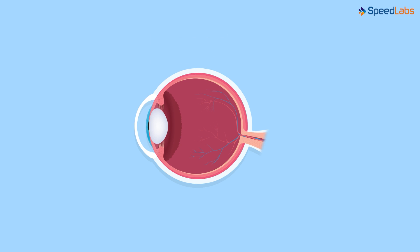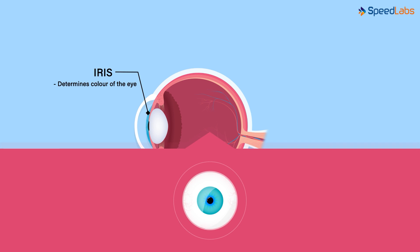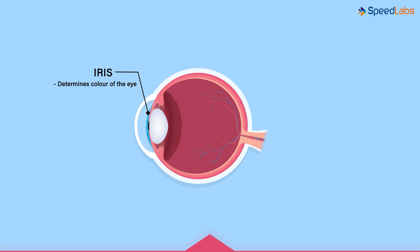Behind the cornea, there is a dark muscular structure called the iris. Iris determines the colour of the eye. For instance, when we say that a person has blue eyes, it means that the colour of the iris of that person's eye is blue. There is a small opening at the centre of the iris for the light to enter, called the pupil.